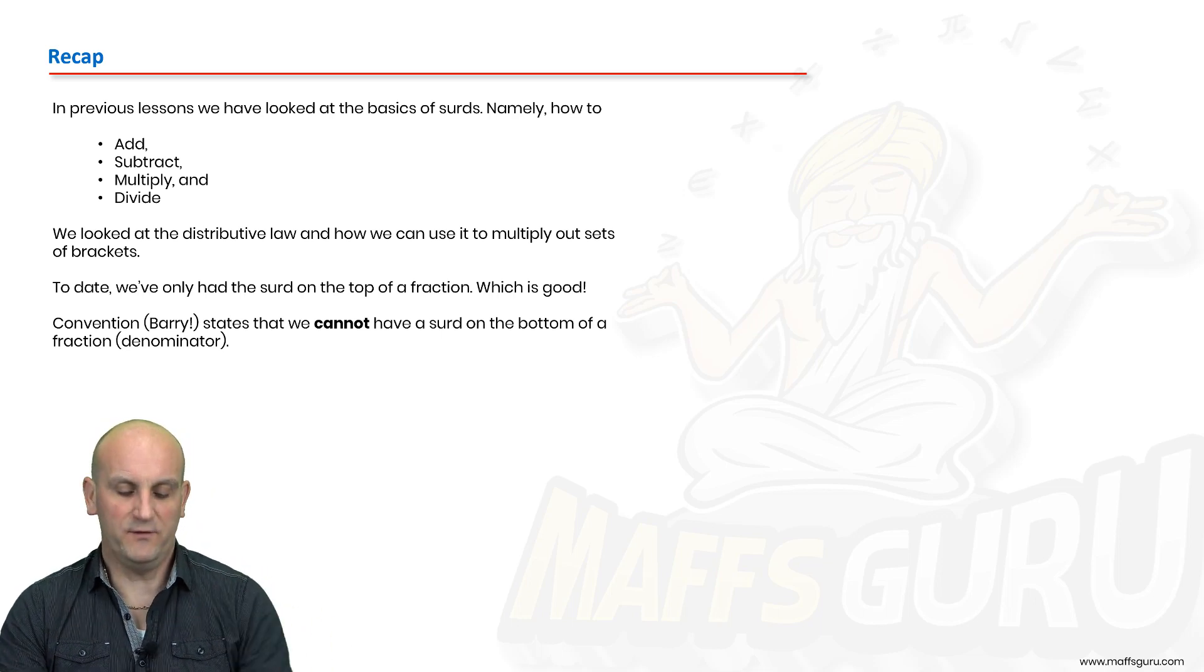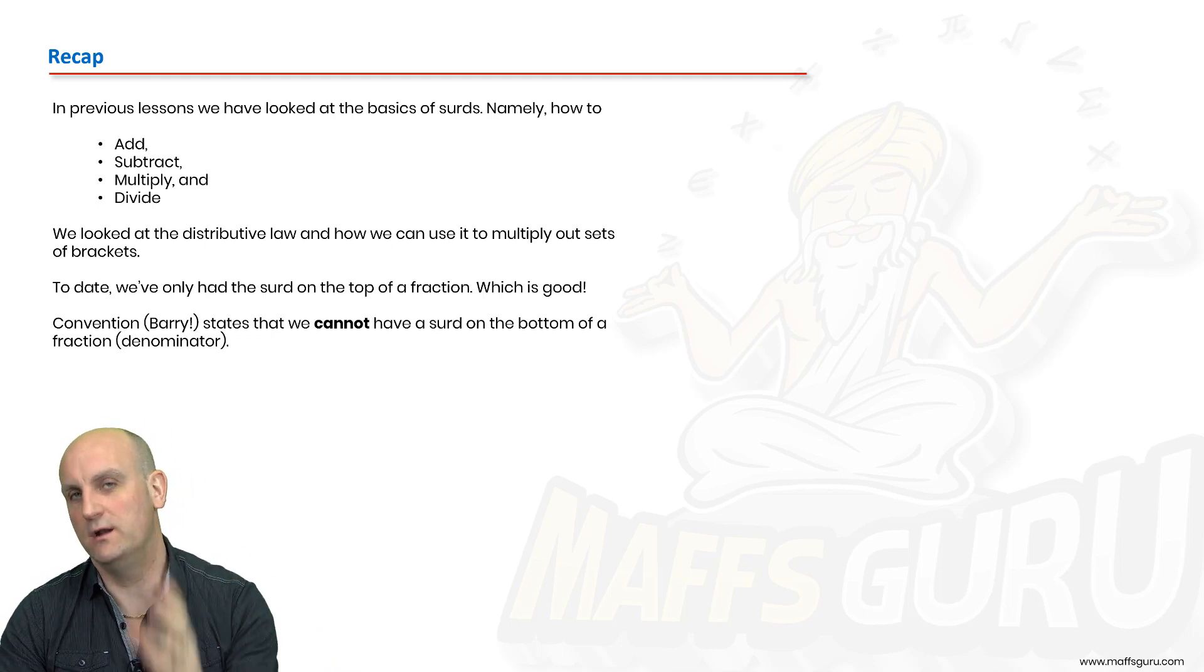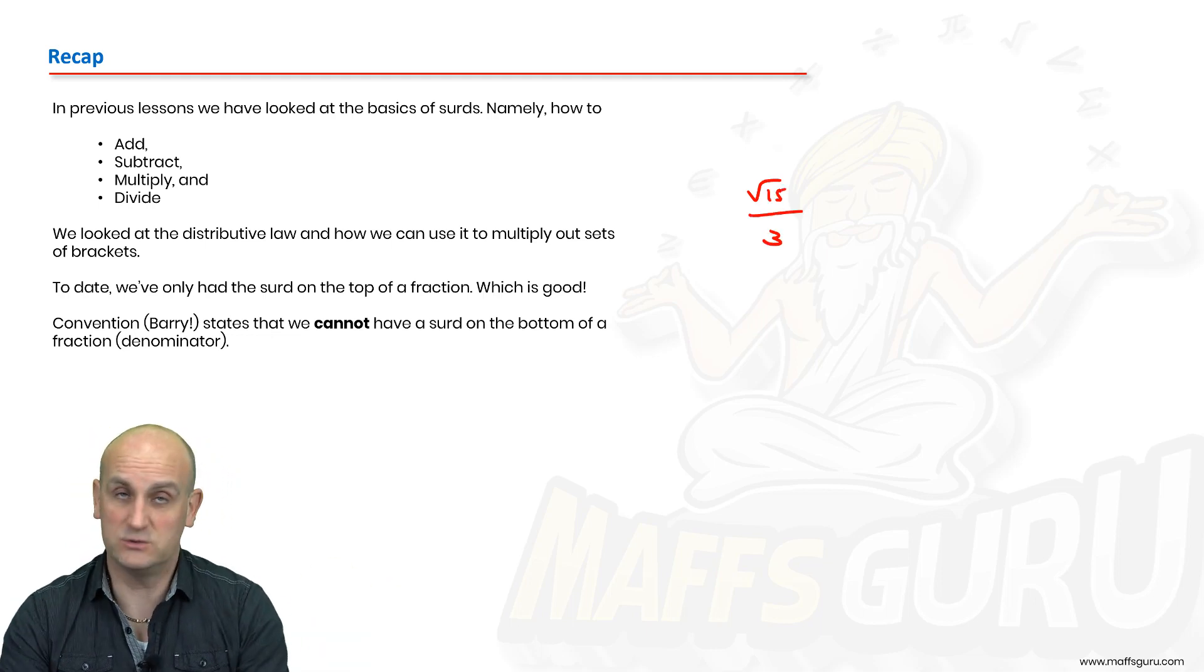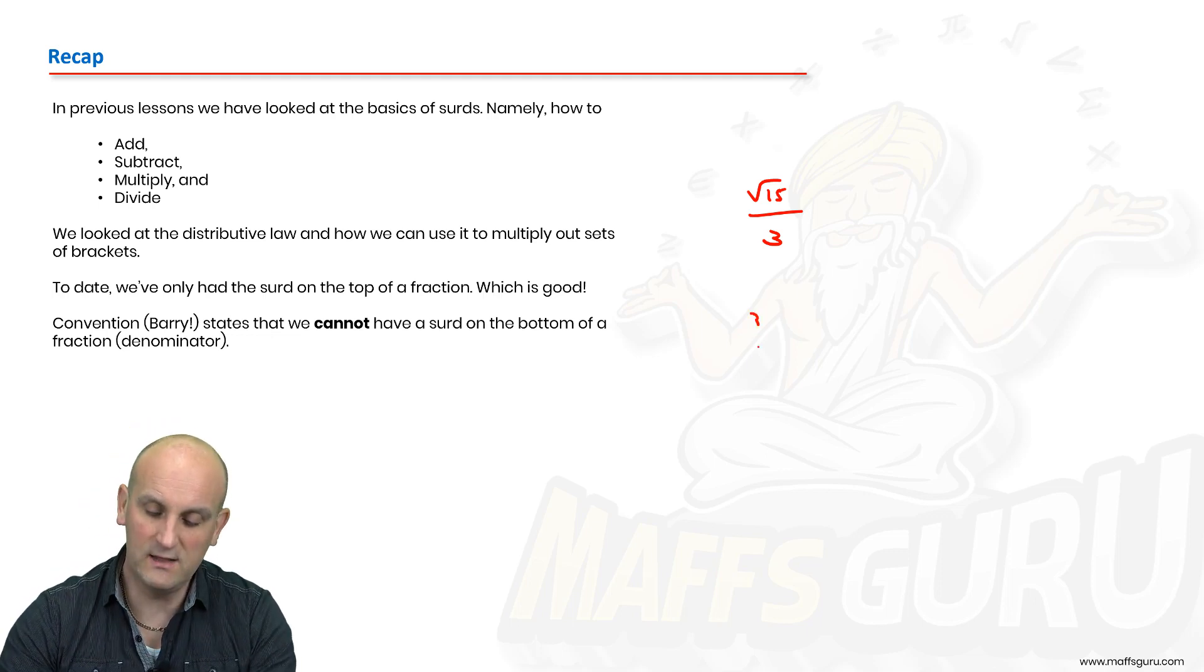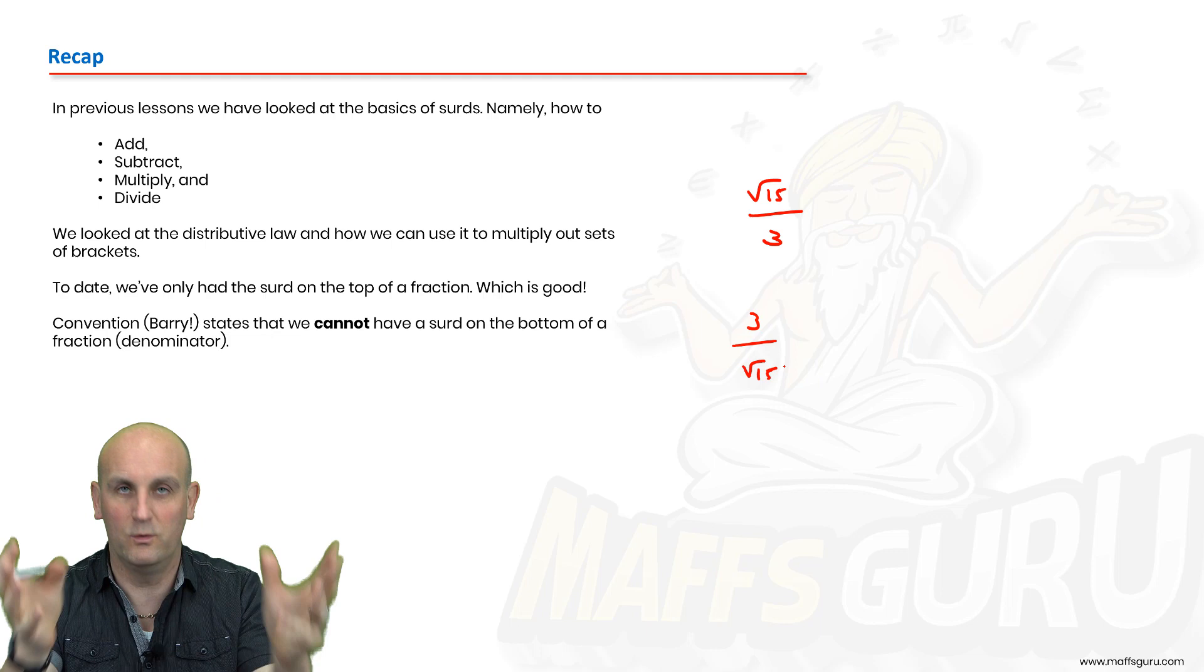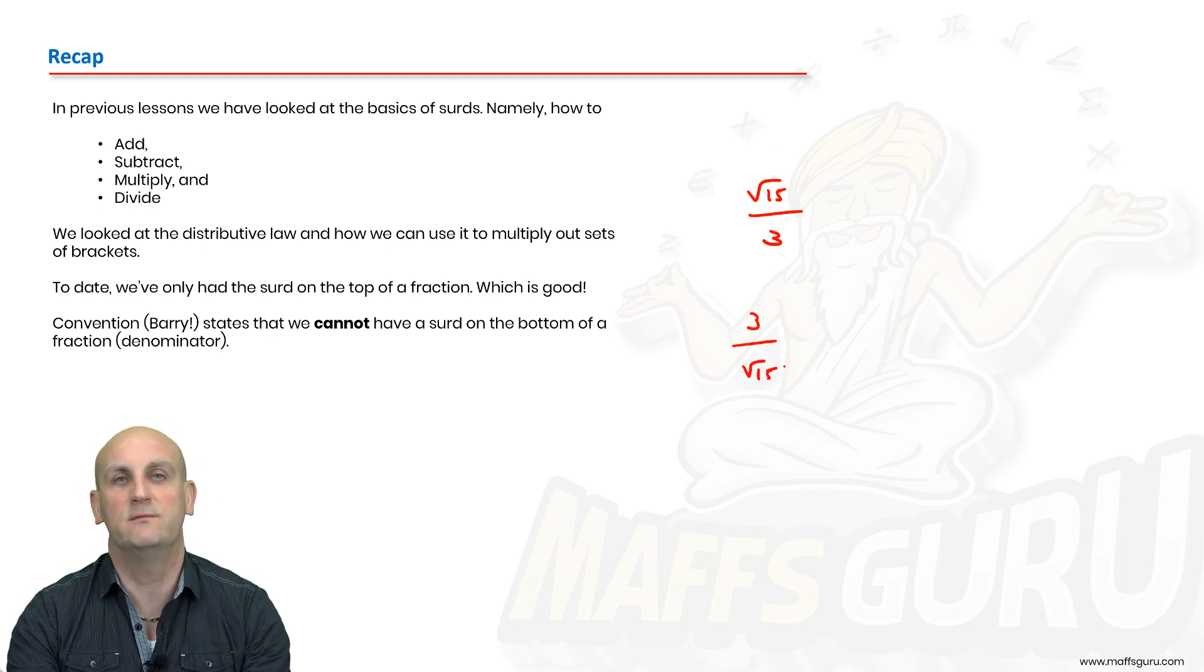We've added, subtracted, multiplied and divided. We've looked at the distributive law and how we can multiply out sets of brackets. And we've always had the surd at the top. For example, we've had things like root 15 on 3 and we've gone, yeah okay, that's awesome. I don't think I've had any examples where we've had the surd on the bottom of a fraction. So if I had it the other way around as 3 on root 15, part of my brain now is going, danger Will Robinson, you're not allowed that.